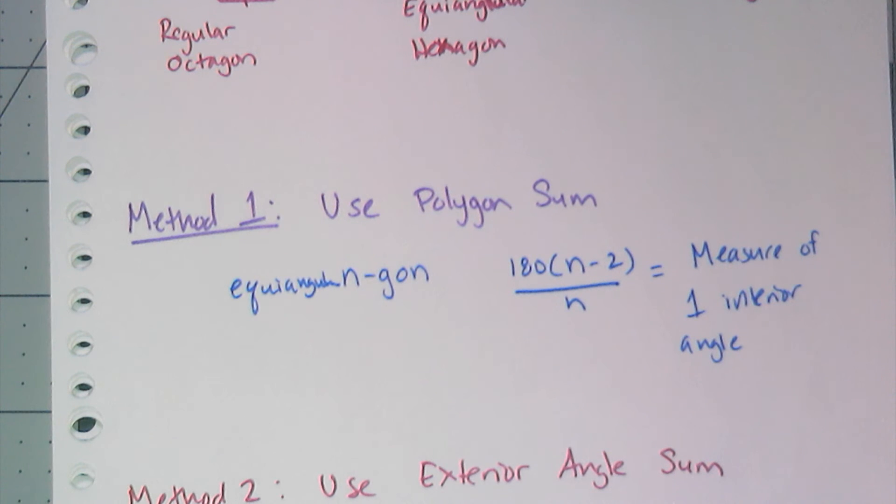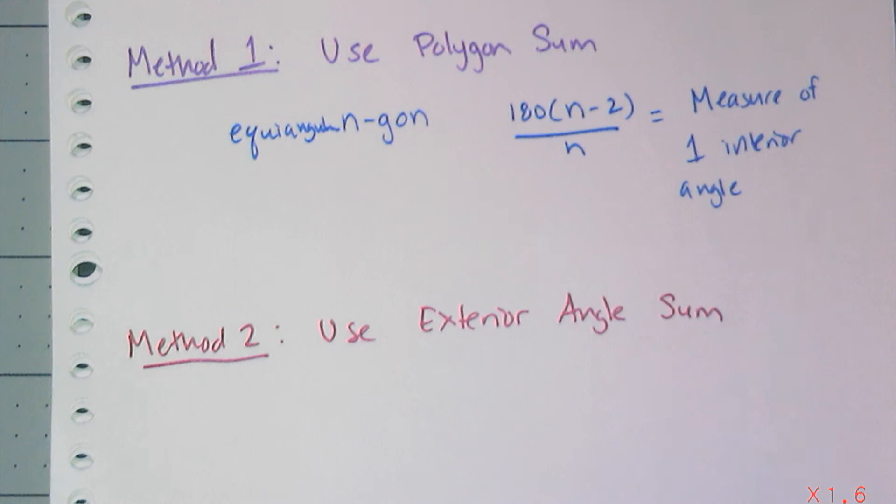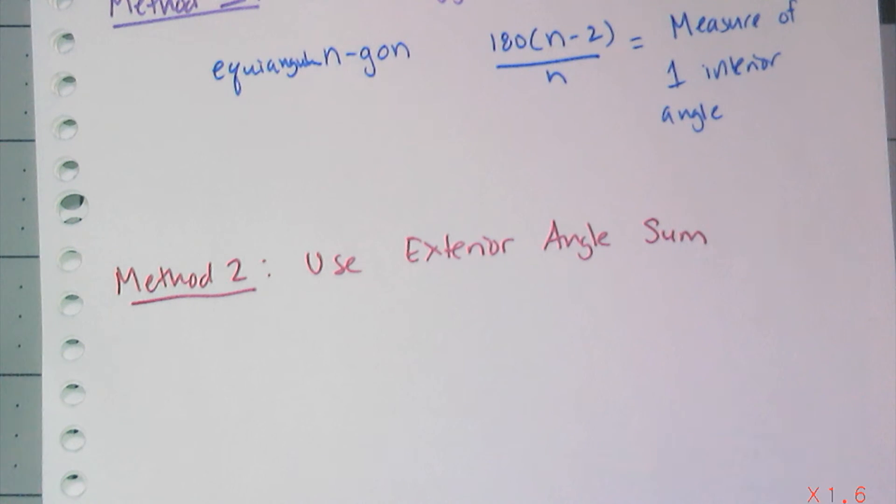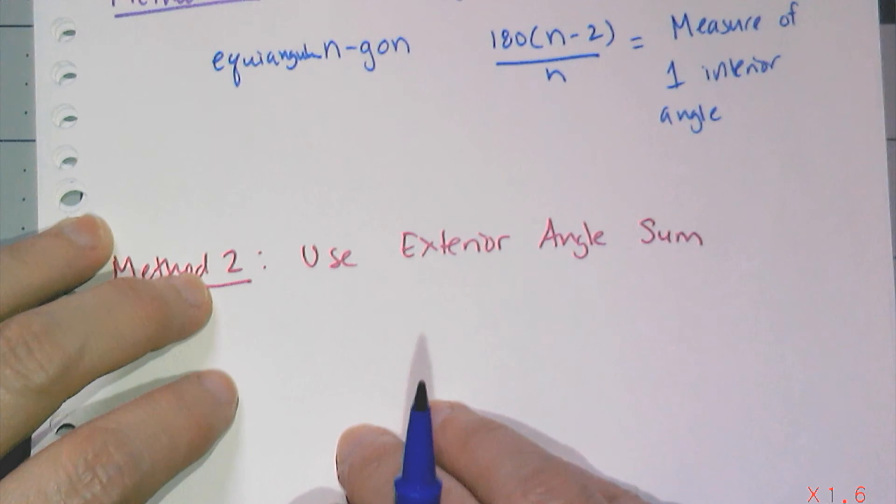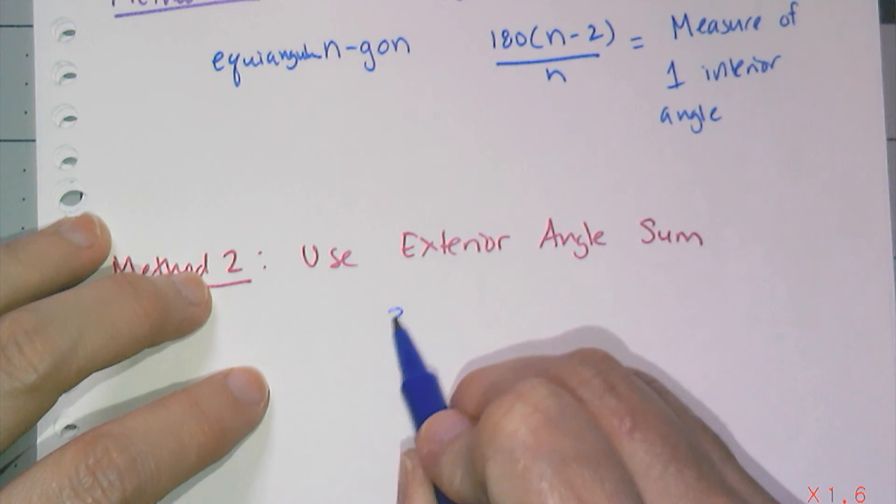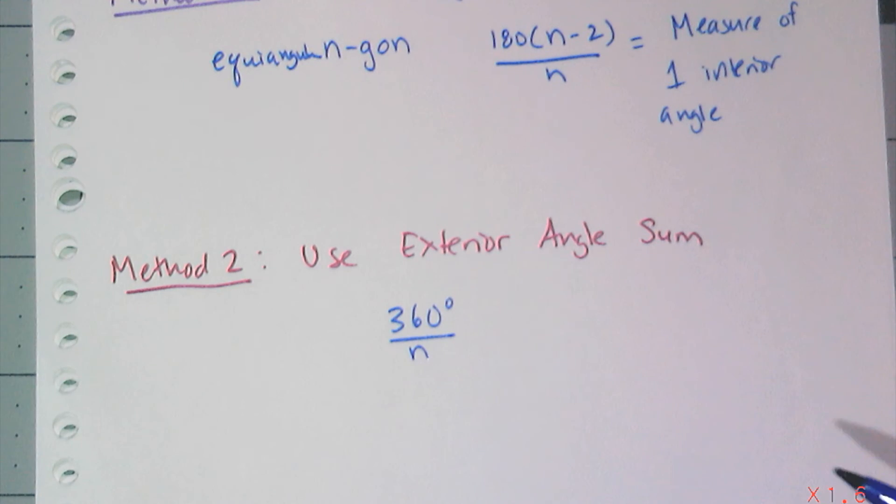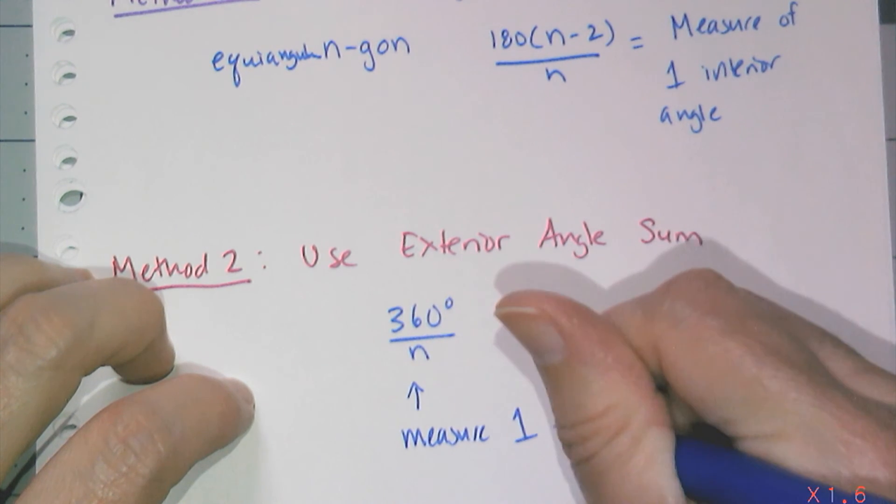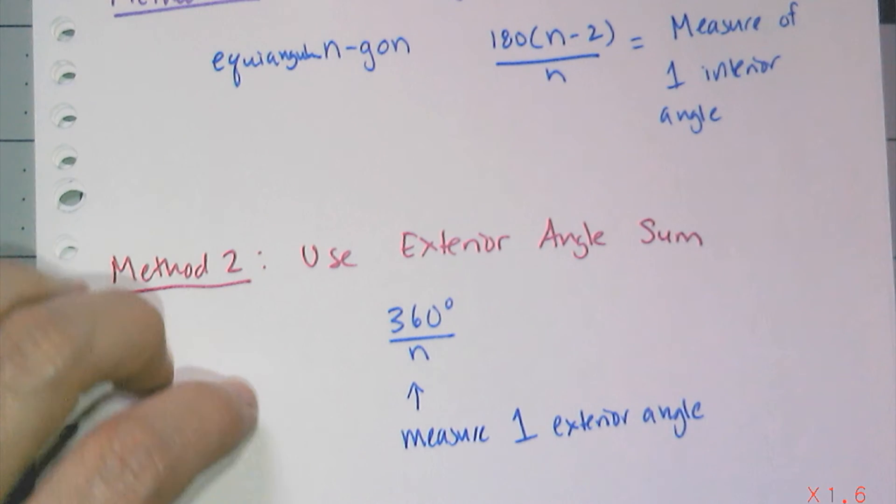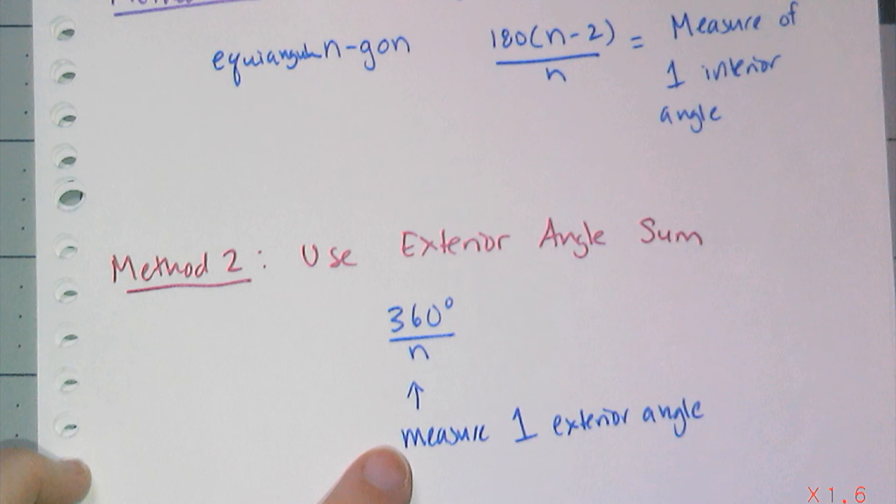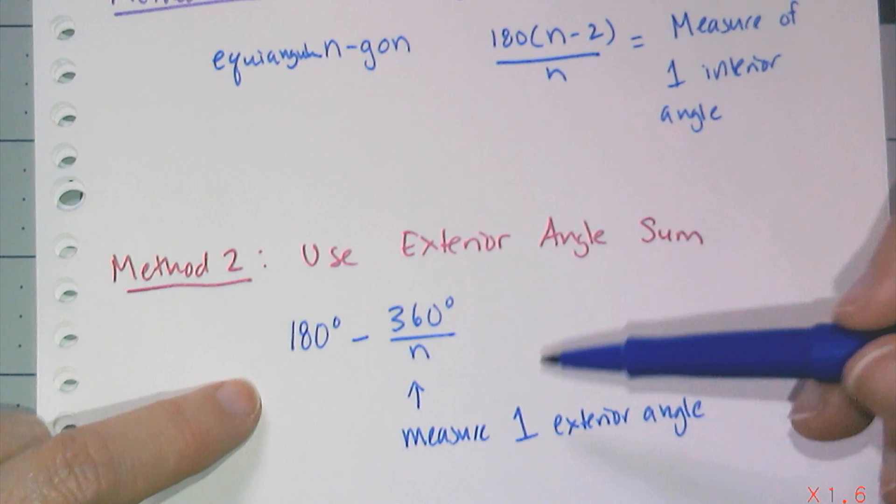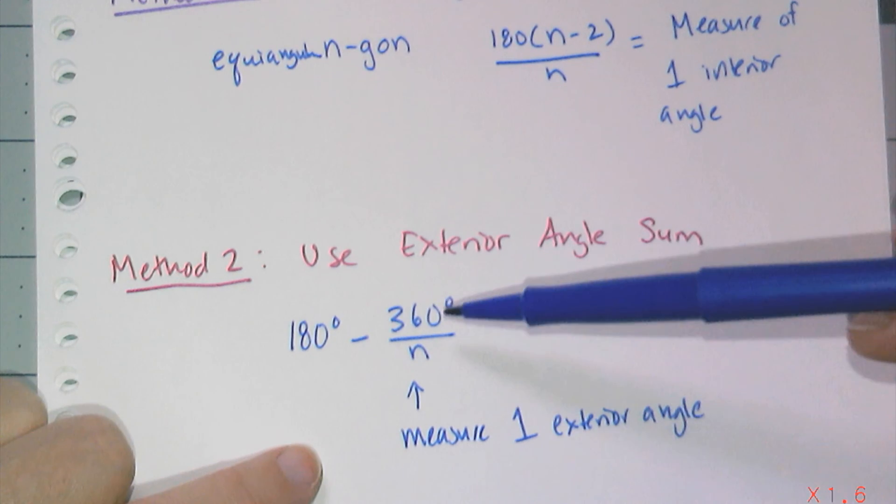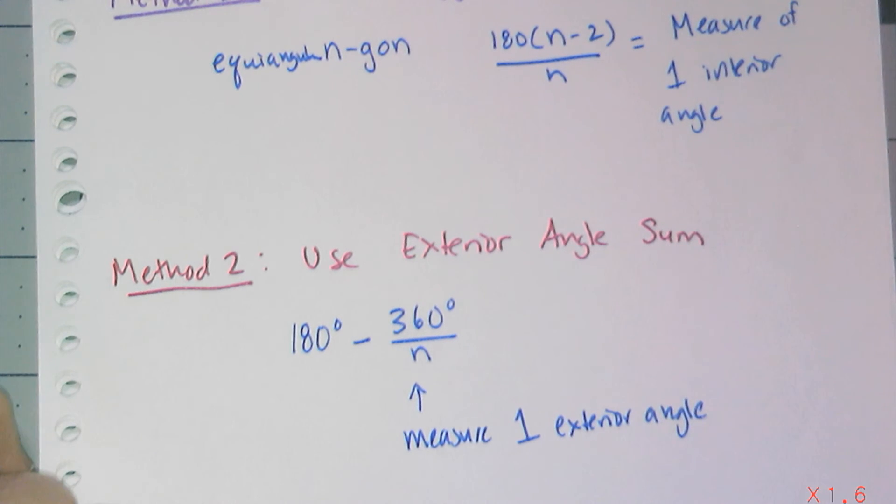And there's an alternative method, which I think is pretty cool. You can use the exterior angle sum. And we know that the sum of the exterior angles of an N-gon are 360 degrees. And the measure of any one of those exterior angles is going to be 360 degrees divided by N. And this is the measure of one exterior angle. And I also know the exterior angle and the interior angle are linear pairs, therefore supplementary. And so an alternate way of coming up with the measure of one of the interior angles of an equiangular N-gon is this formula here. 180 minus 360 divided by N.